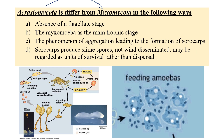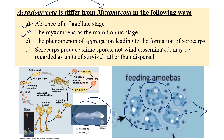Acrasiomycota differs from Myxomycota in the following ways. Generally, Acrasiomycota shows absence of a flagellate stage — there is no flagellate stage. The mixoamoeba is the main trophic stage in Acrasiomycota. If you look at Acrasiomycota, it produces a mixoamoeba as the most important feeding stage — whichever direction the cytoplasm is growing, the amoeba moves forward in the same way.